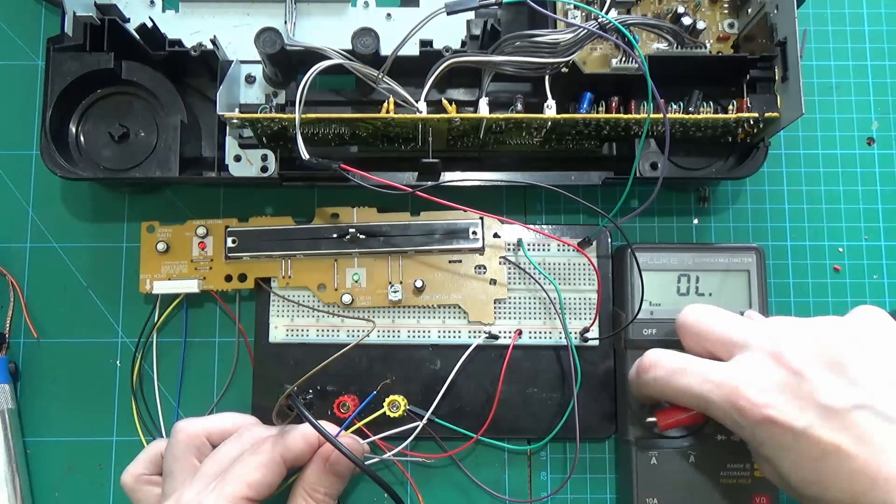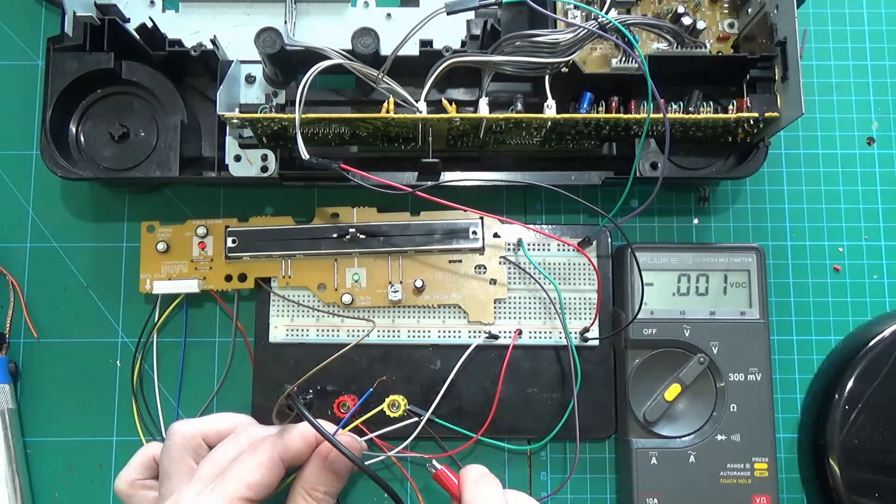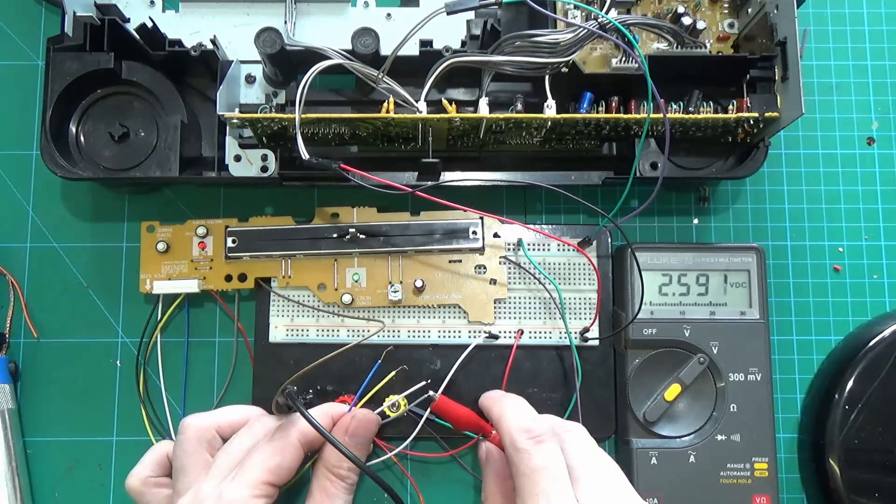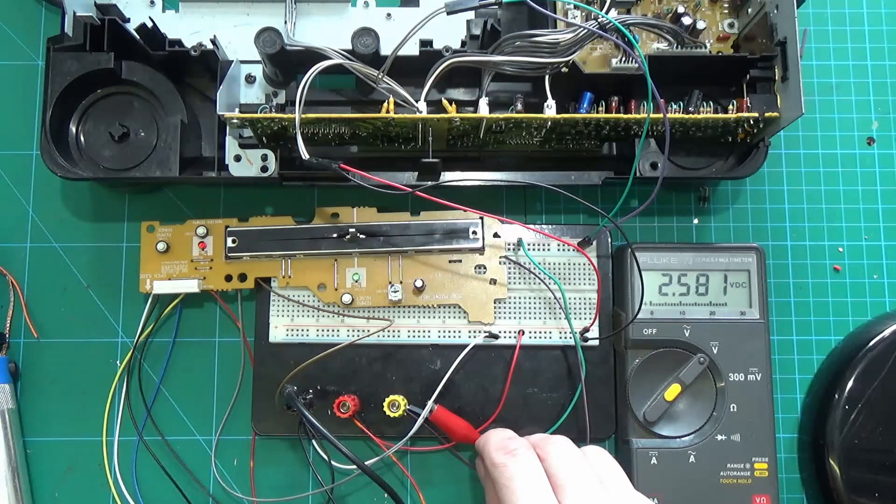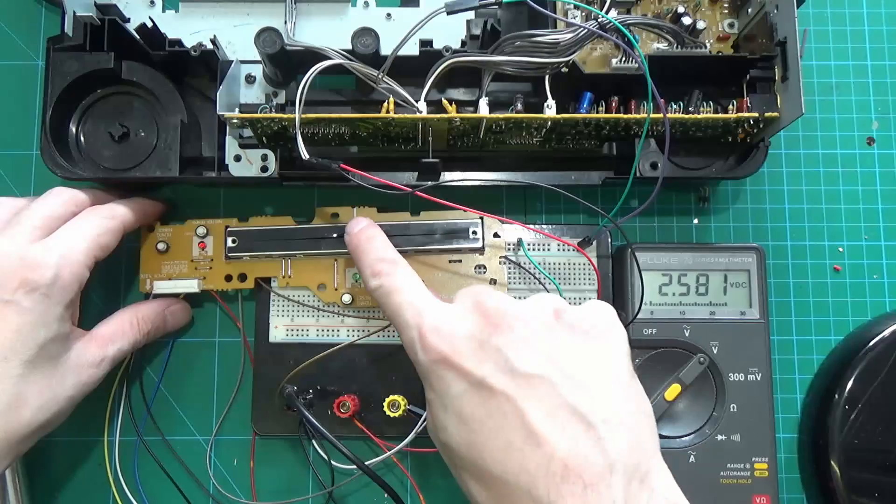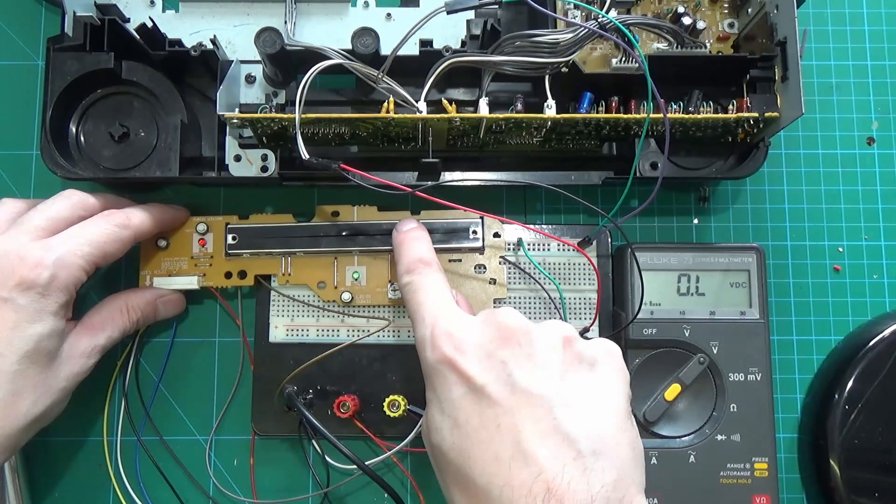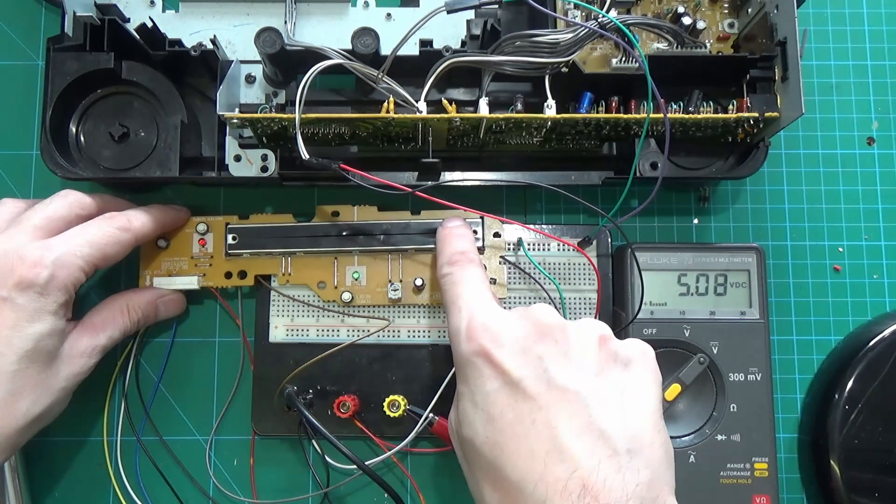So this would go to our analog input on the Teensy. So in the center position we're getting roughly half of 5 volts. As we move it to one side it goes up, and then we go down it goes down to zero.